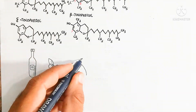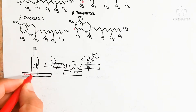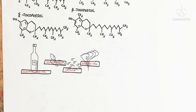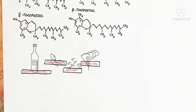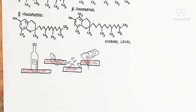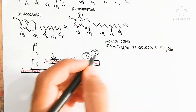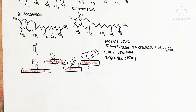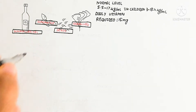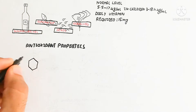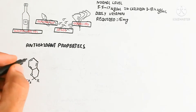Tocopherols are present in sunflower oils, almonds, nuts, seeds, and green vegetables. The normal level in the body is 5.5 to 17 micrograms per milliliter, and in children it is 3 to 18.4 micrograms per milliliter. The daily requirement of vitamin E, which is also found in fish oil, is 15 milligrams.